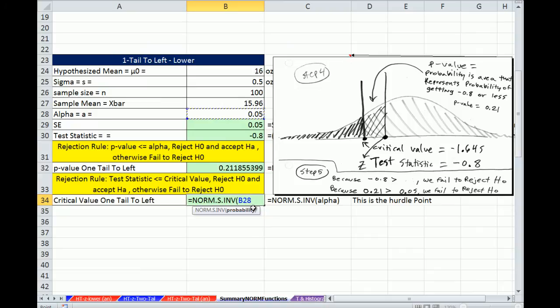Negative infinity up to that. So we just leave it 0.05. So that's minus 1.64. We can clearly see that our test statistic is not less than this, so we fail to reject.